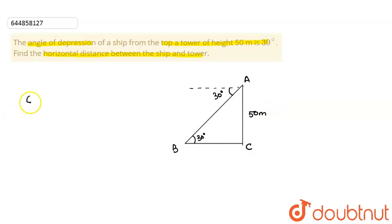So what is given? Given is AC is equal to 50 meters, angle ABC is equal to 30 degrees. So we can say that in triangle ABC, if we apply tan theta is equal to perpendicular upon base, we can find BC, correct?